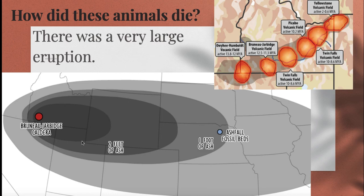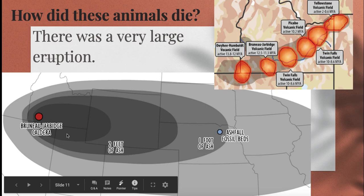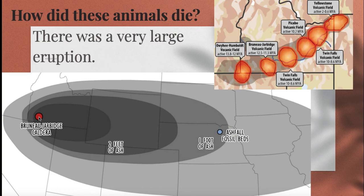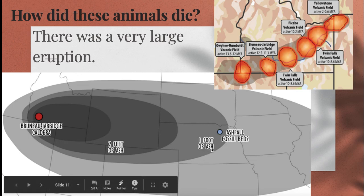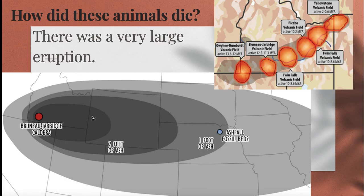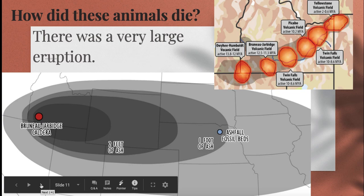So 12.5 to 13, or 11.3 million years ago, at the current location of what we call today the Yellowstone hotspot, there was a giant eruption. These gray oval shapes show the area covered by ash, and it really stretched all the way to the Atlantic Ocean. You can see where the Ashfall fossil beds are — there was about one foot of ash. The darker the color, the deeper the ash would be. Beyond this would be less than one foot of ash. So what happened after that eruption?